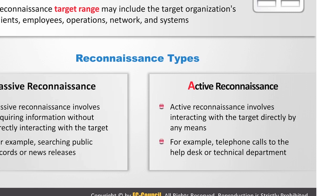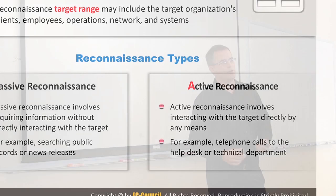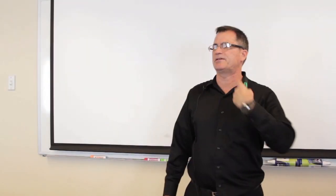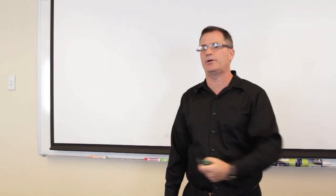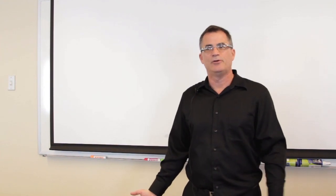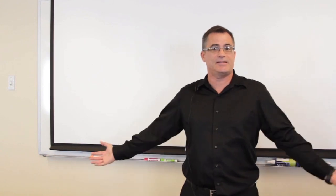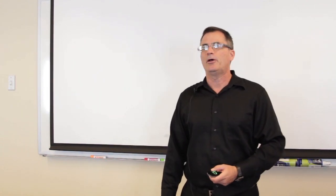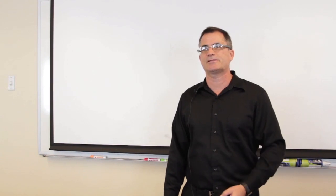In networking, active reconnaissance means we interact with the target directly by any means. We make telephone calls to the help desk, call the technical department, send traffic into the network to see how it responds, check if filtering is set up, or send an email to see if they have restrictions on attachments. We might send a test virus — like the EICAR test — just to see if they detect it. All of these are part of active reconnaissance.